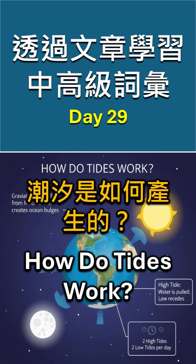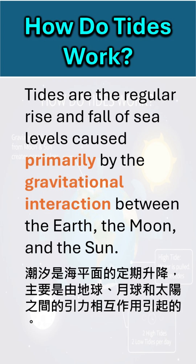How do tides work? Tides are the regular rise and fall of sea levels caused primarily by the gravitational interaction between the Earth, the Moon, and the Sun.